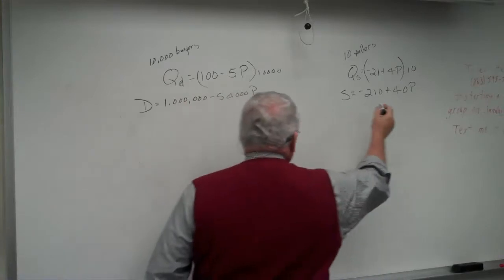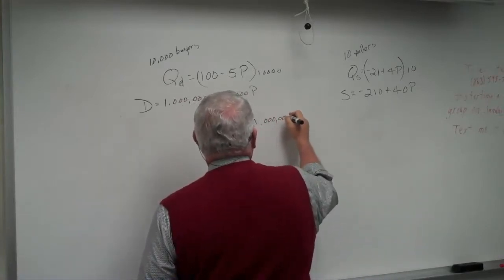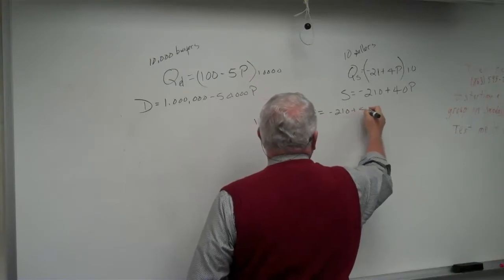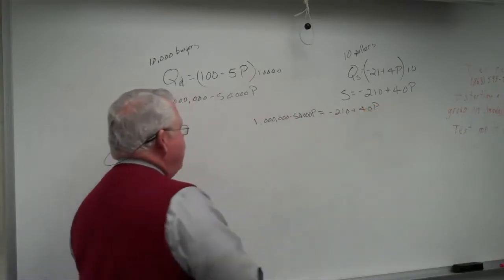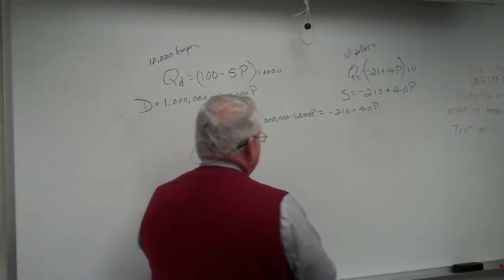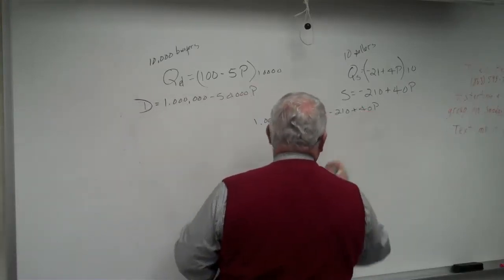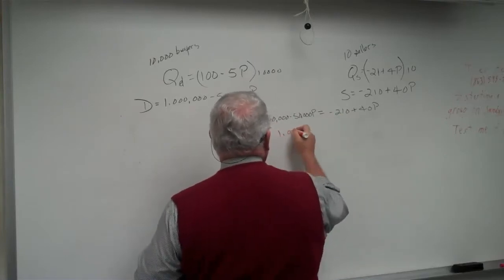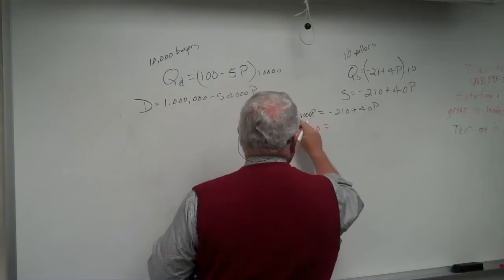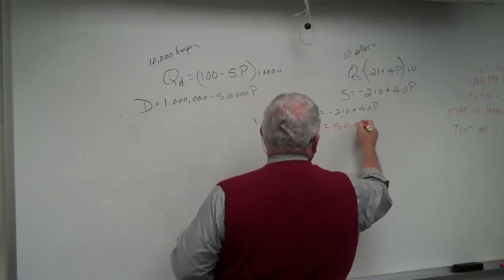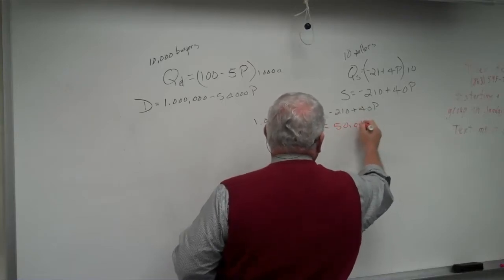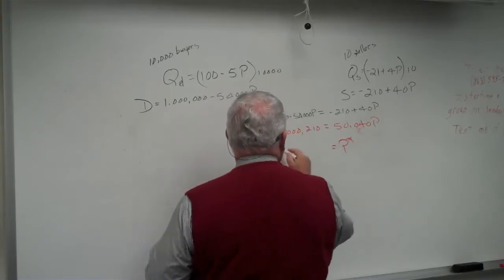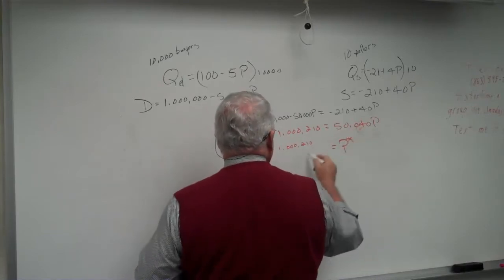So I'm going to set these two equations equal to each other. I've got one equation with one unknown — I'm going to solve for the value of P. I'm going to move all the P terms over to one side. I'm going to add 210 over here, move the P term over here, I get 50,000 plus 40P. So my equilibrium price is 1,000,000 plus 210 divided by 50,000 plus 40P.